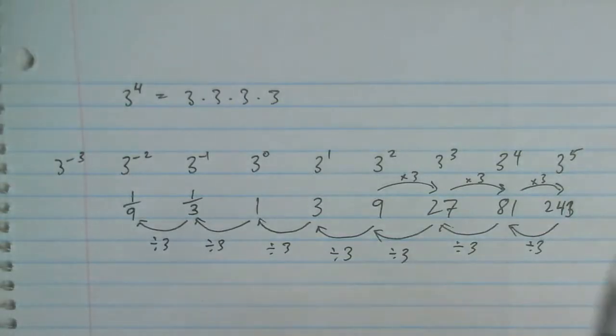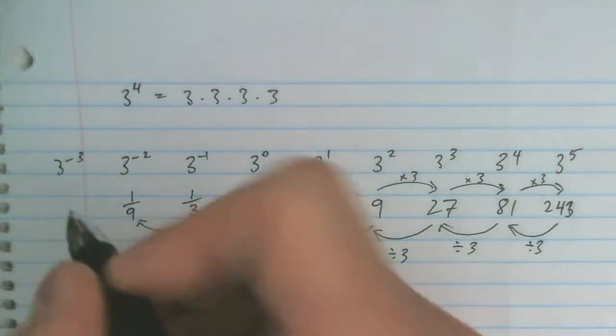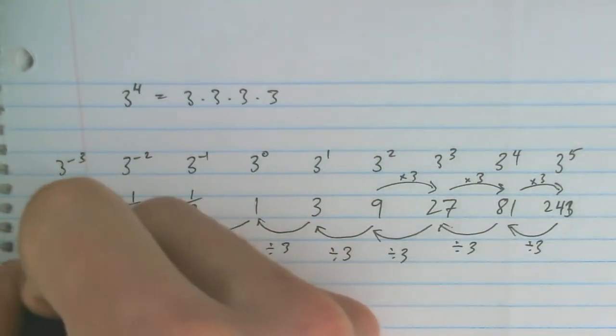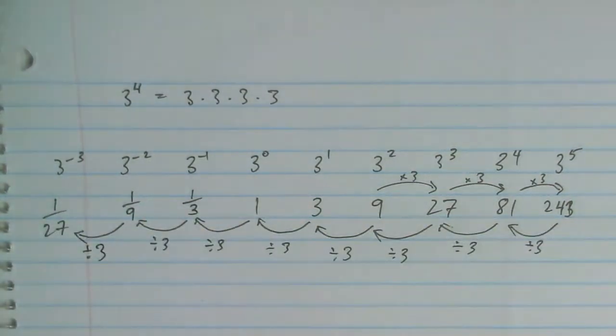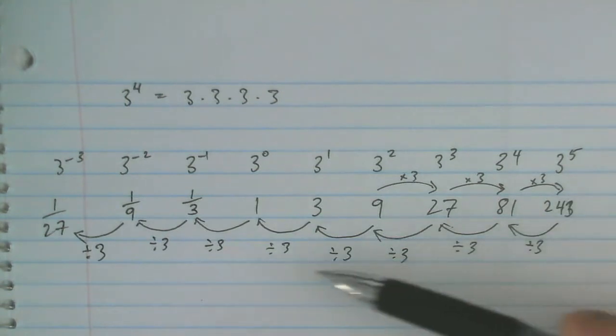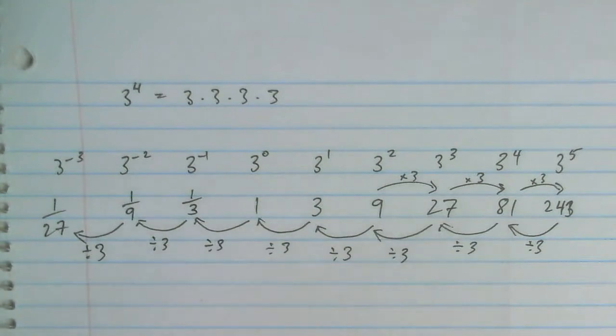And I'm just continuing the pattern with the exponents, subtracting 1 from the exponent. So when I'm going in this direction, I'm dividing by 3, and when I'm going in this direction, I'm multiplying by 3.